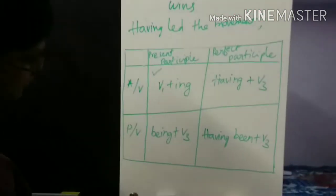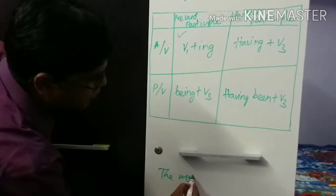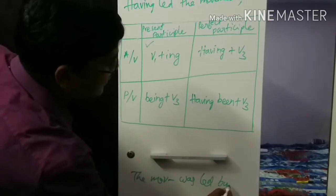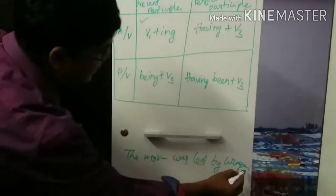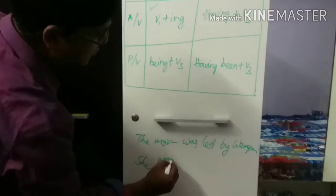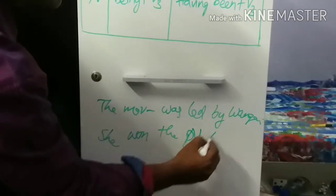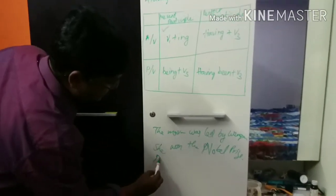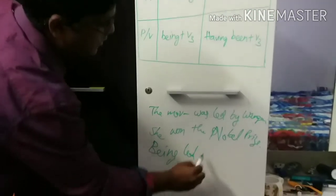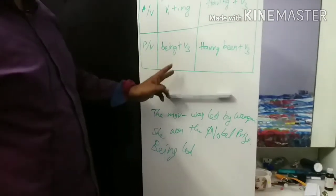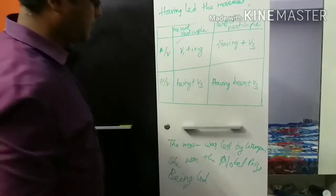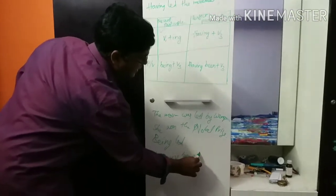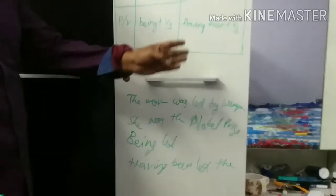The same sentence can be written in passive voice: 'The movement was led by Wangari. She won the Nobel Prize.' In present participle passive: 'Being led by Wangari, she won the Nobel Prize.' In perfect participle passive: 'Having been led by Wangari, she won the Nobel Prize.'